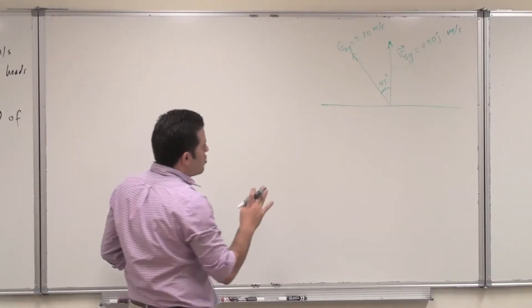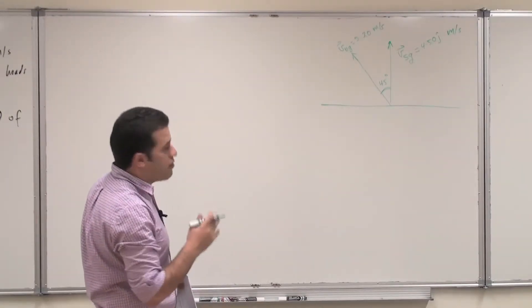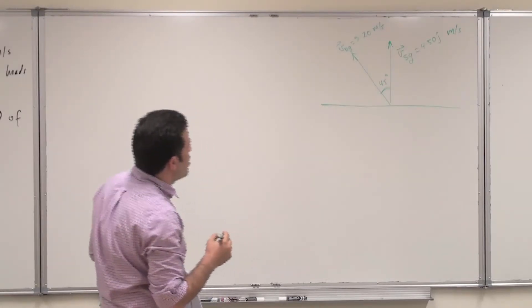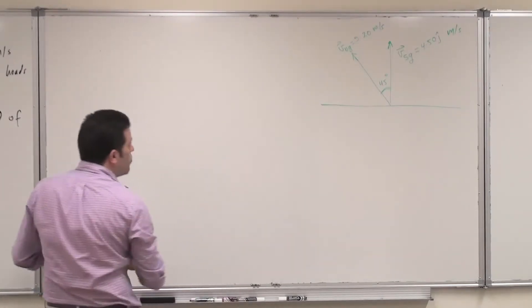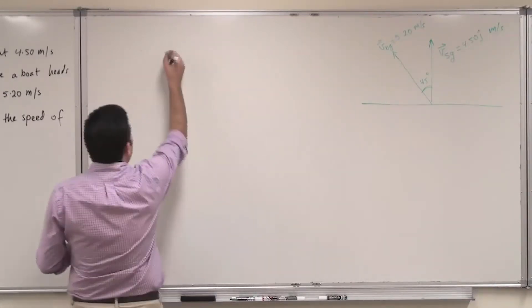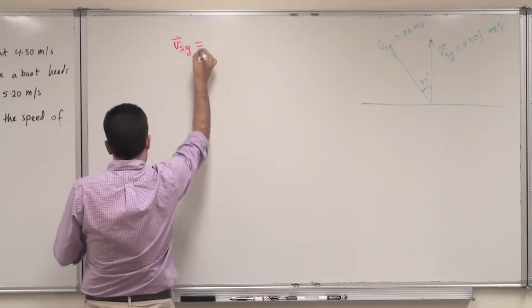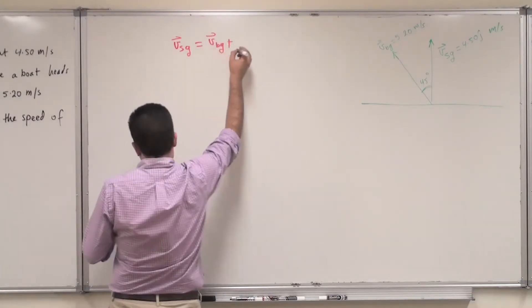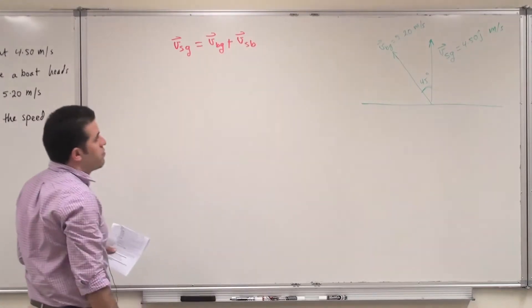This is a question of relative motion with two frames of reference: the earth as the static frame of reference, and the boat as the second frame of reference. We relate them using the equation: the velocity of the ship relative to the ground equals the velocity of the boat relative to the ground plus the velocity of the ship relative to the boat.